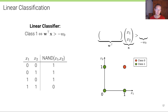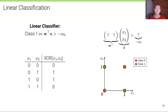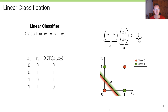We can also define the NAND operator — the NOT-AND — simply by reversing the decision. However, for the XOR operator, if either x1 or x2 is one and the other is zero we predict class one; otherwise class zero. In this case it becomes more complicated: there is no single linear decision boundary that can correctly classify these two classes, neither one orientation nor another. So what can we do?